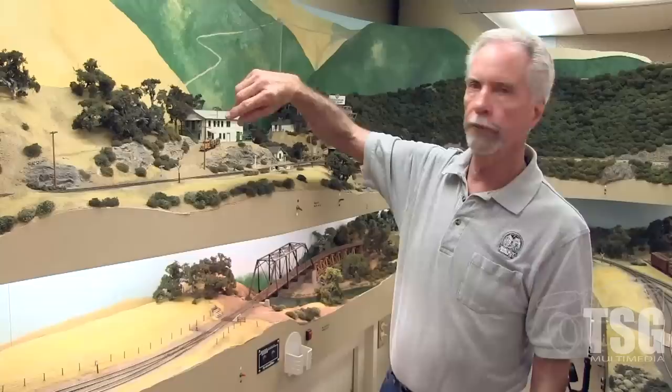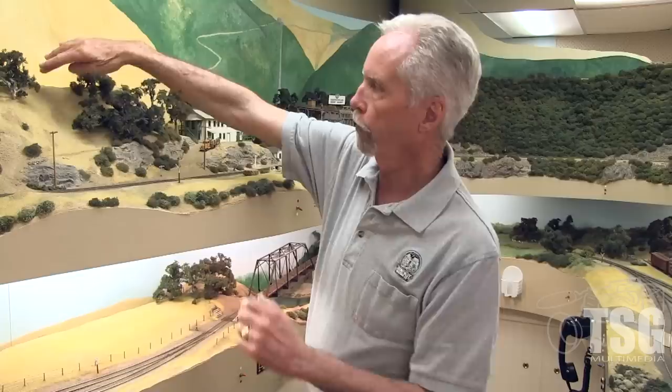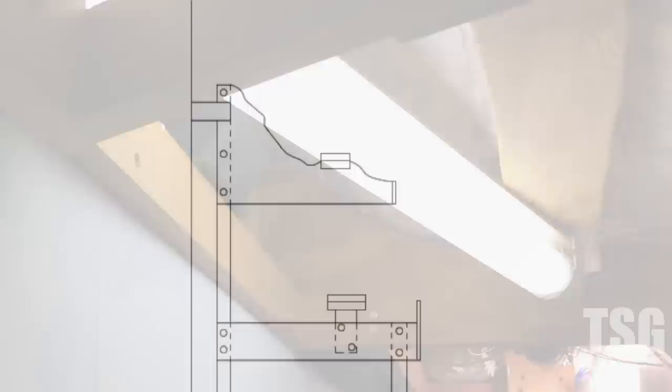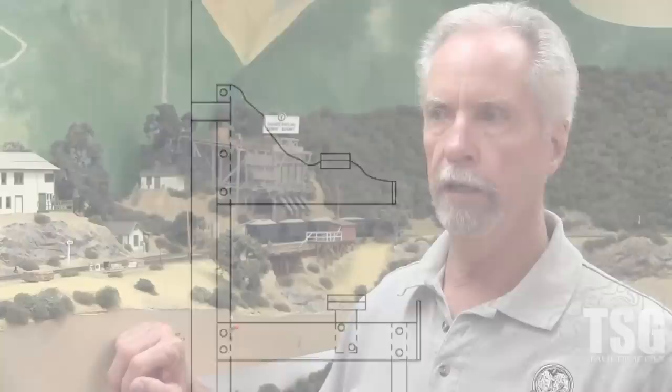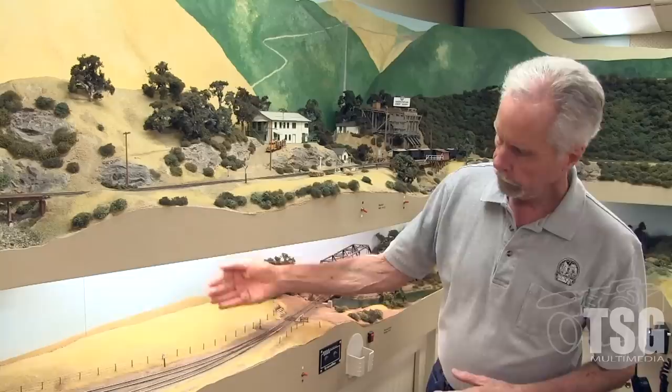This would be a good time to talk about the design of the second deck and how you're going to support it. Because I have mountainous scenery, I cut three-quarter inch plywood into profile boards, which act as lever arms. The scenery touches these profile boards and they support the wood supporting the track itself. If the second level is flat, profile boards are not really an option. What some modelers have used instead is steel angle — it supports from underneath, and then the backdrop hides the steel from view.